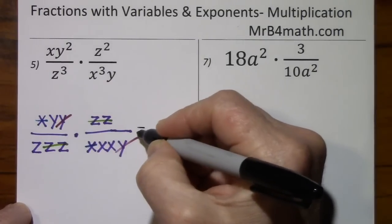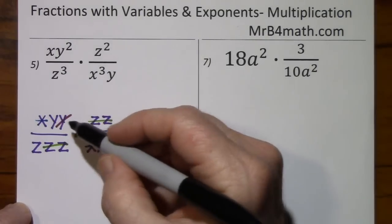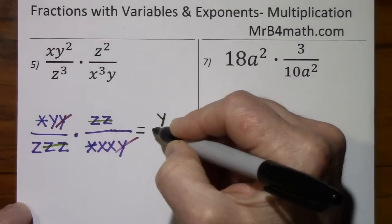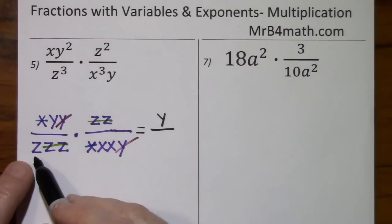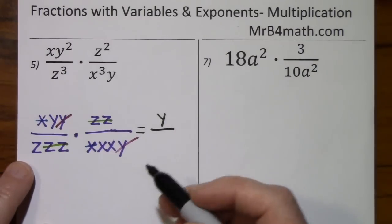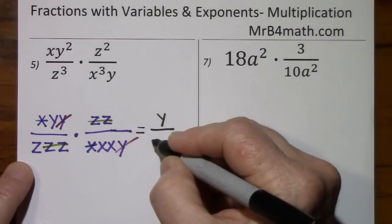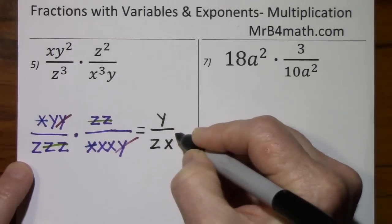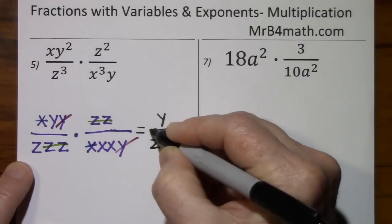So what's left standing? We have a y in the numerator. We have a z and x squared in the denominator.